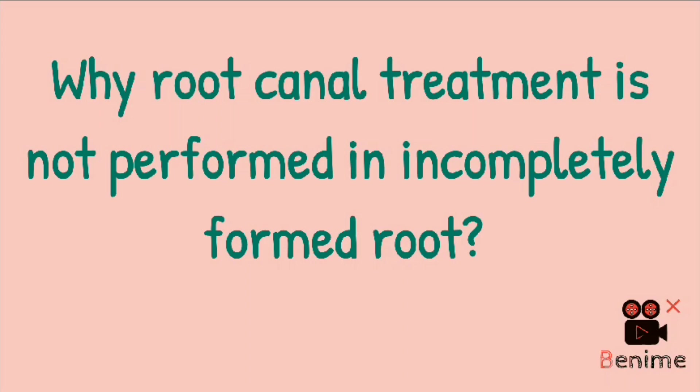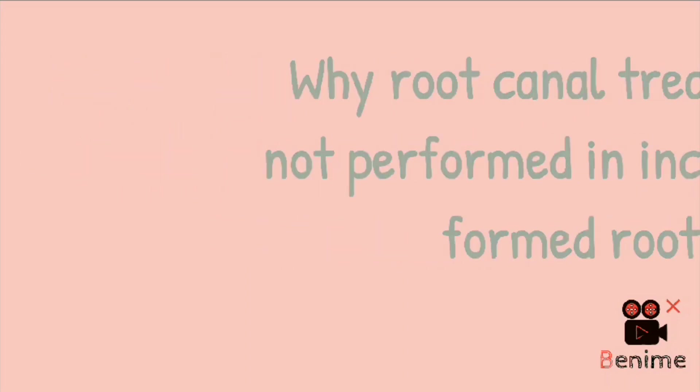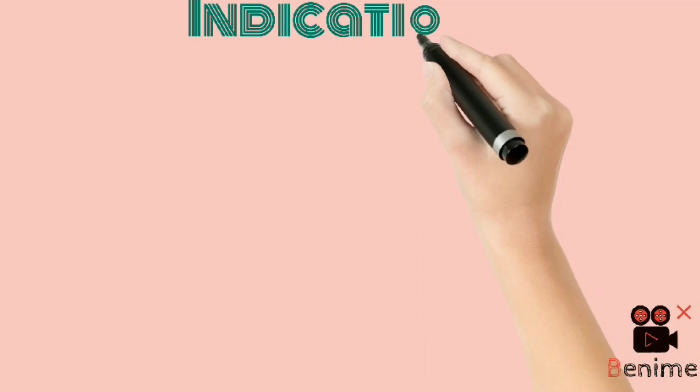Why? Because an incompletely formed root has relatively thin dentine, which on obturation increases the risk of fracture. Moreover, in a tooth with a wide apical foramen, pulp revascularization and repair occurs more readily. There is significant repair potential in the pulp of an immature tooth.